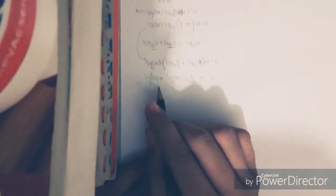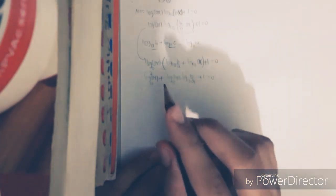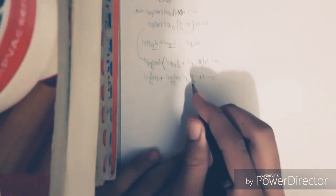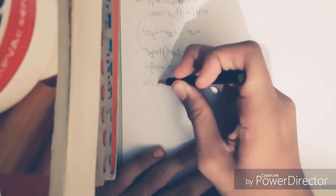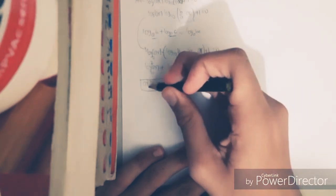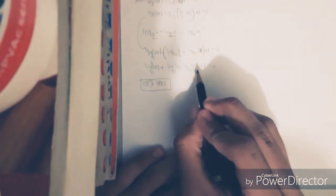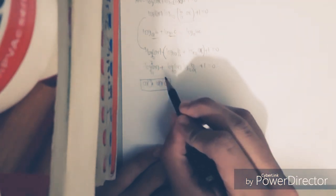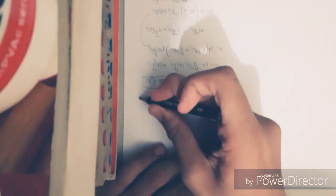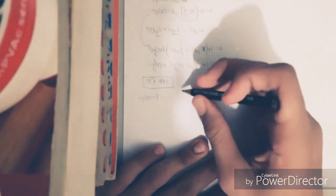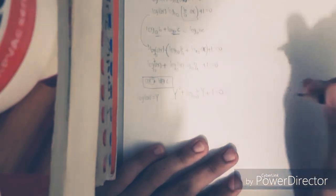In this equation, log(ax) appears as both a squared term and a linear term — just like a variable in a quadratic equation. This is analogous to the standard quadratic x² + bx + c = 0. To simplify, we substitute y = log(ax), giving us: y² + log₁₀(b/a)·y + 1 = 0.